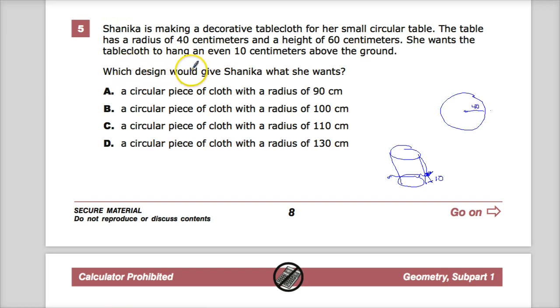Which design would give Shanika what she wants? So I've got to go here plus down, and I've got to go down to 10 centimeters from the ground. It's at 60 centimeters, so this whole thing is 60. So she wants to drop it 50 centimeters.